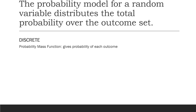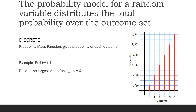The probability mass function gives the probability of each outcome in the outcome set. For example, if we roll two dice and record the largest value facing up on the two dice, and call that our random variable x, we can display the probability mass function graphically like this.